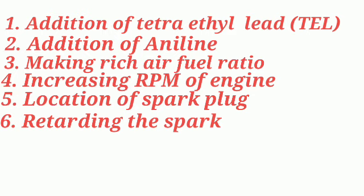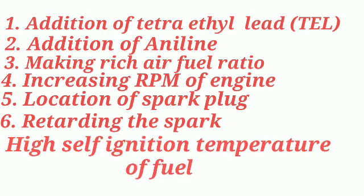Retarding the spark provides sufficient time for the burning of fuel in the combustion chamber. The seventh method is using fuel with a high self-ignition temperature. Fuels with higher self-ignition temperatures are less prone to detonation because the temperature of the end portion of the mixture will not rise to the self-ignition temperature, so chances of auto-ignition are very low. Hence, fuels with higher self-ignition temperatures can be used to avoid detonation.